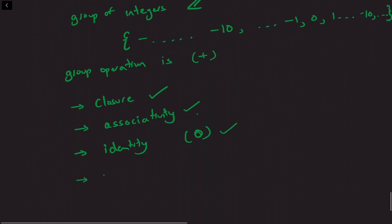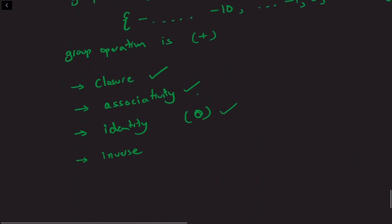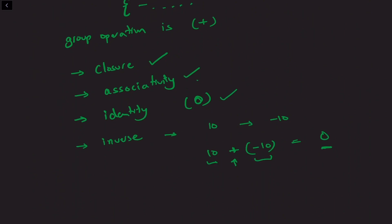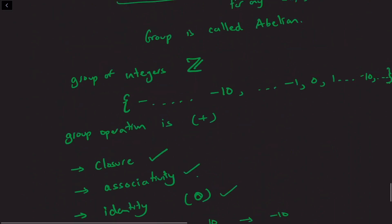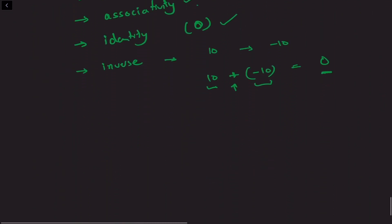There is also an inverse — each element has a unique inverse. For example, if I take the integer 10, the inverse is minus 10, because 10 plus minus 10 is 0, the identity element. For every element there is a unique inverse. Therefore, the set of integers under addition forms a group. Moreover, since a plus b equals b plus a, this group is also Abelian.